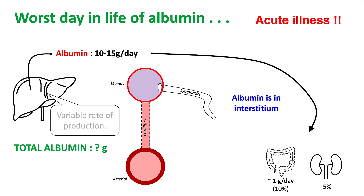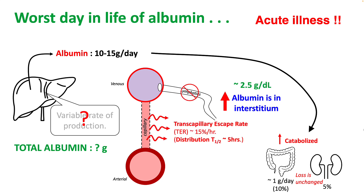The worst scenario in the life of albumin occurs when you develop acute illness and start developing hypoalbuminemia. There is some question about the rate of production in the liver in acute illness, which we'll discuss shortly. There is a slight increase in the rate of catabolism, while losses are mostly unchanged. The transcapillary escape rate in acute illness increases, sometimes to 10–15% per hour, decreasing the distribution half-life down to five to six hours. Since lymphatics don't work well in acute illness, albumin in the interstitium increases while concentration in the intravascular compartment decreases.